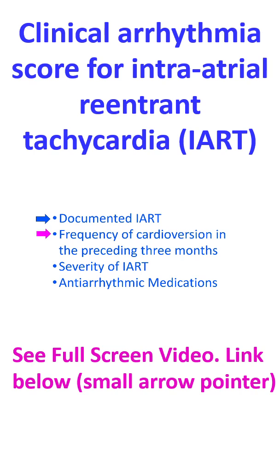For frequency of cardioversion: 0 for no cardioversion, 1 point for one cardioversion, 2 points for AAIT cardioversion, and 3 points for two or more cardioversions. AAIT cardioversions were defined as one or more automatic or manual cardioversions performed using an implanted atrial pacemaker and not requiring any additional intervention.